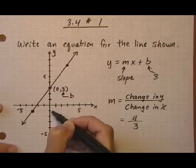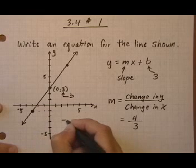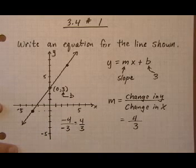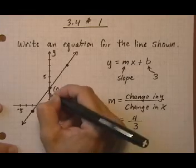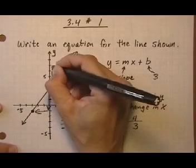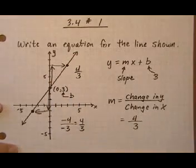We could say down one, two, three, four—negative four—over to the left three (one, two, three)—left three would be negative three. That still gives us four thirds, right? Going there and there. But we went up four, right three: plus four over plus three.